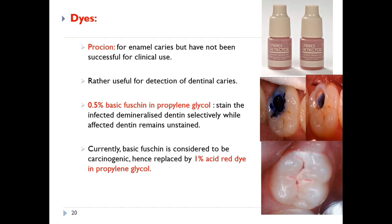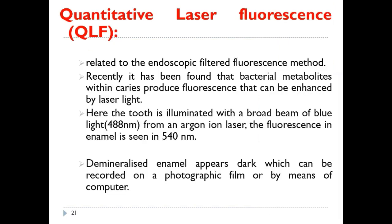Caries detector dyes such as Procyon are available for detecting enamel caries, though they have not been successful for clinical use. These are composed of 0.5% basic fuchsin and propylene glycol, staining infected demineralized dentin selectively while affected dentin remains unstained, allowing hand excavators to remove only stained parts. Since basic fuchsin is considered carcinogenic, it has been replaced by 1% acid red dye in propylene glycol.